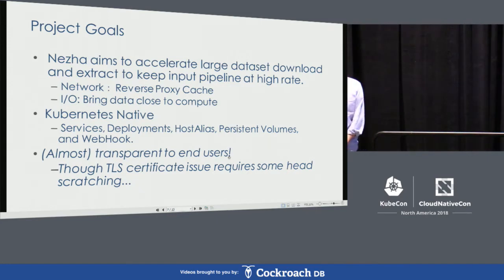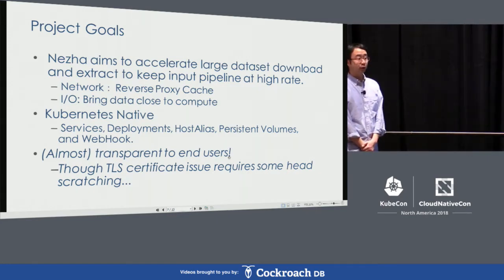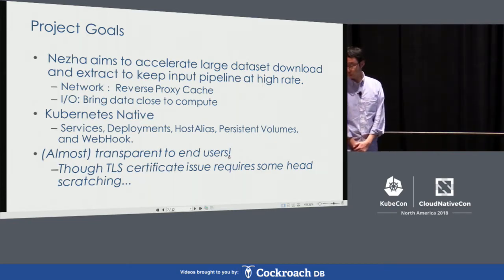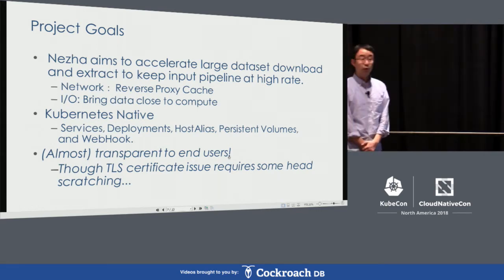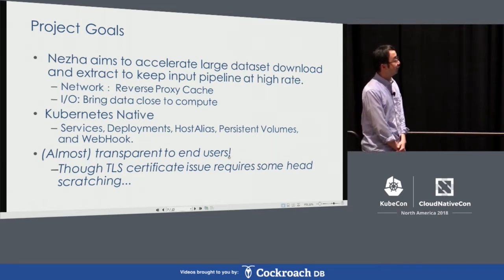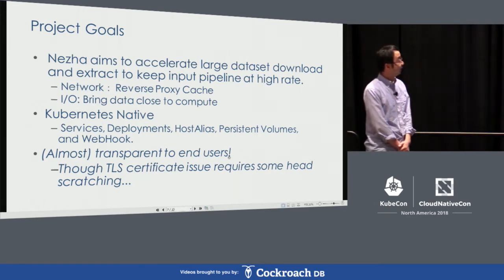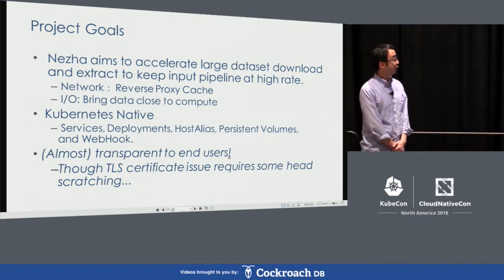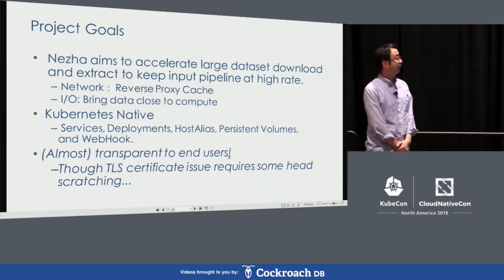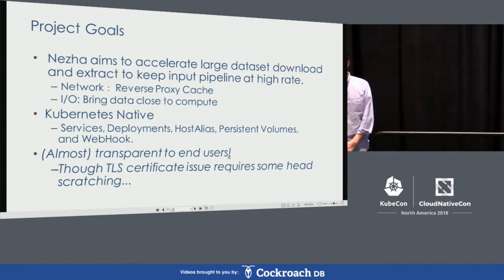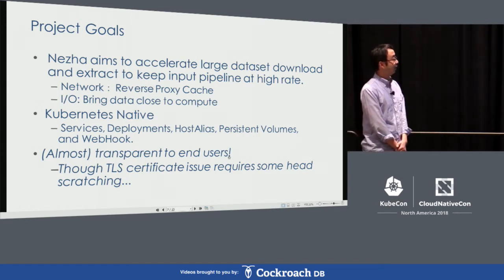I'm going to introduce more details for this project. The goals are simple and straightforward. First, we want to improve data download speed by bypassing network latency, and put data closer to the compute node for faster I/O speed. Second, we want to build a Kubernetes-native project — very simple, with no other dependencies. The core ideas we use are host alias and webhook, which I'll introduce in later slides. Third, we want to make this transparent to end users — your existing applications don't have to change anything.